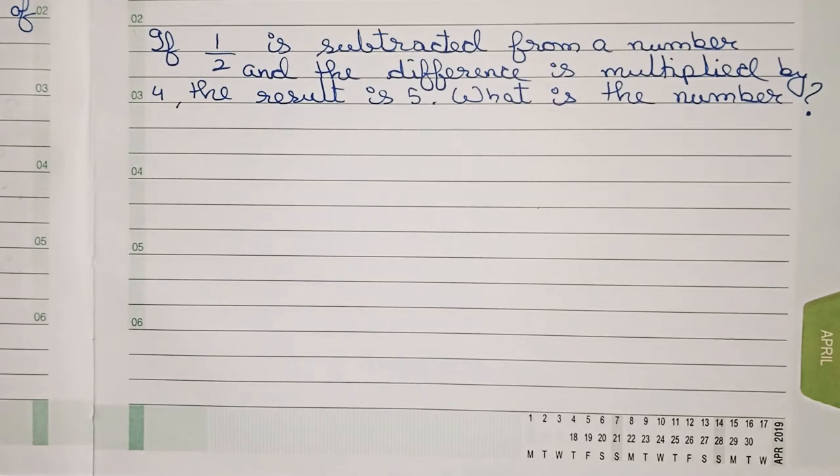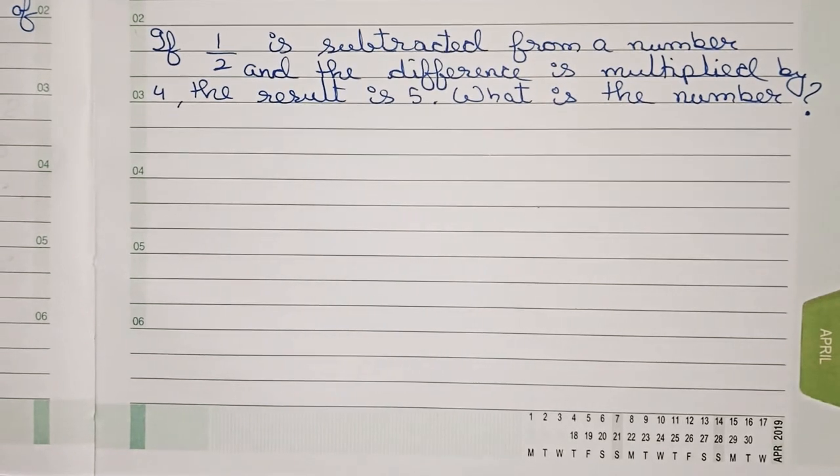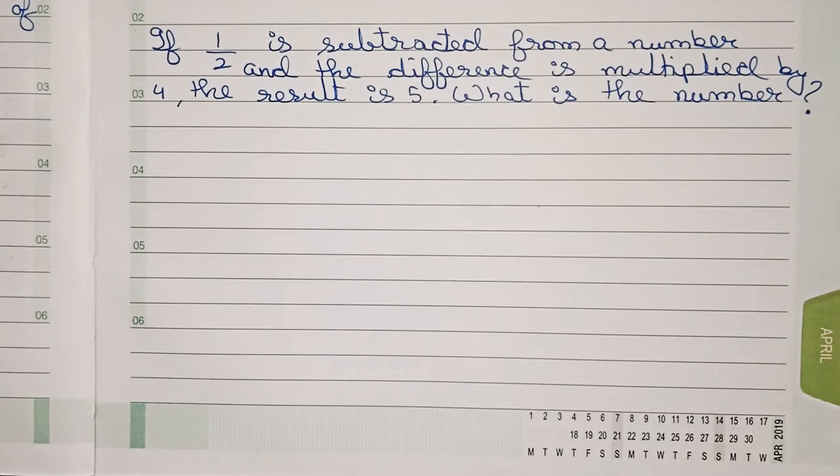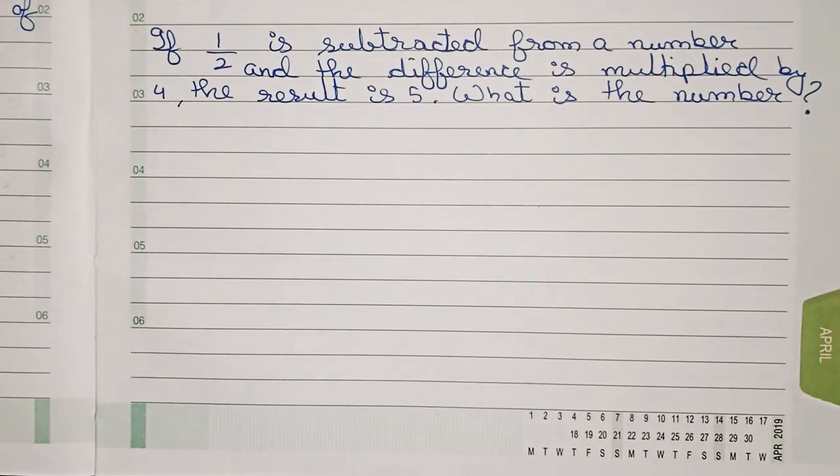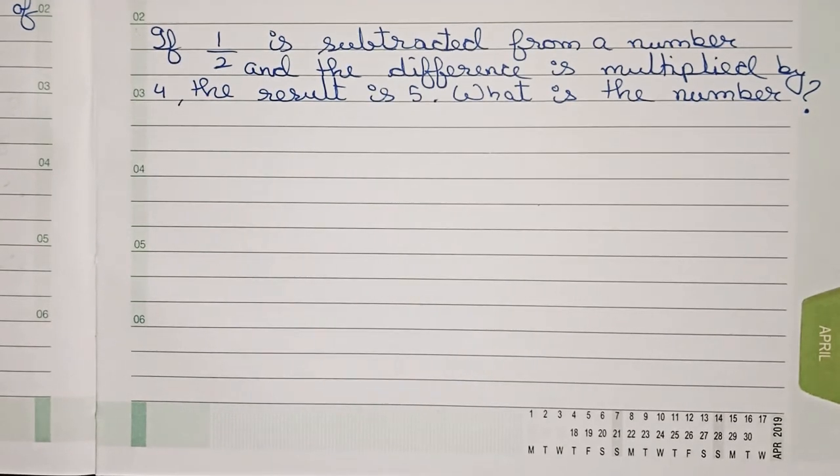Hello guys, welcome to this video. In this video, our question is: if 1/2 is subtracted from a number and the difference is multiplied by 4, the result is 5. What is the number? So this is our question.